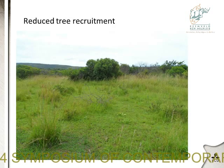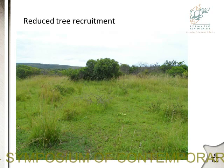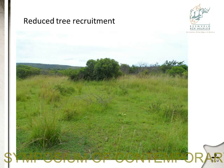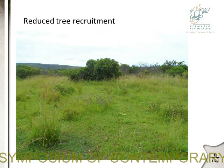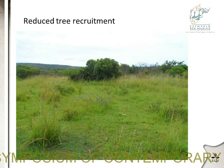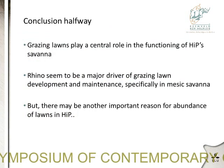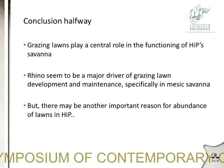Lastly, grazing lawns seem to be very effective at stopping woody recruitment — woody species have a hard time recruiting inside a grazing lawn. You see it if you drive around the park: woody species recruit in tall grassland or underneath trees, but not on grazing lawns. So if you talk about bush encroachment, grazing lawns play a central role in that discussion. The conclusion halfway is that grazing lawns seem to play a central role in the functioning of HiP's savannah systems.